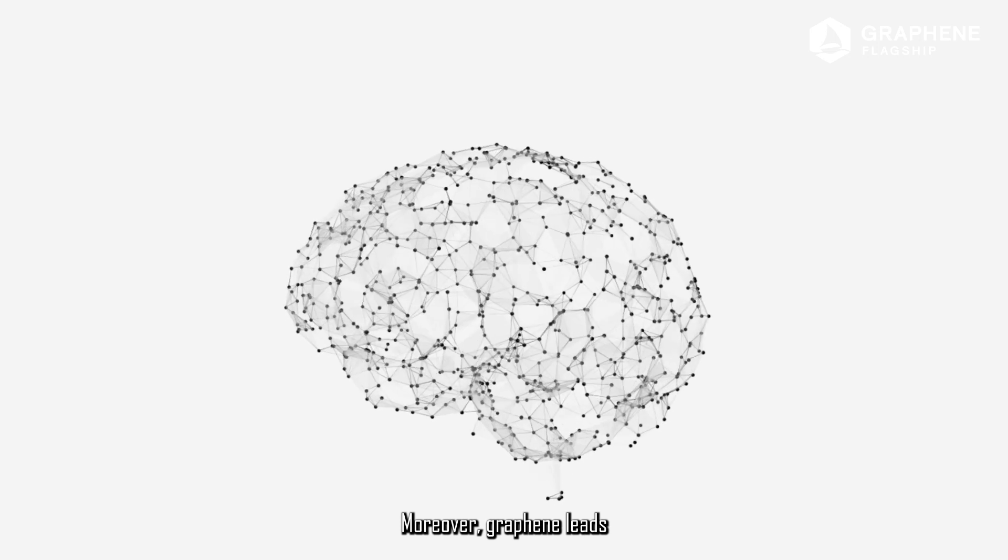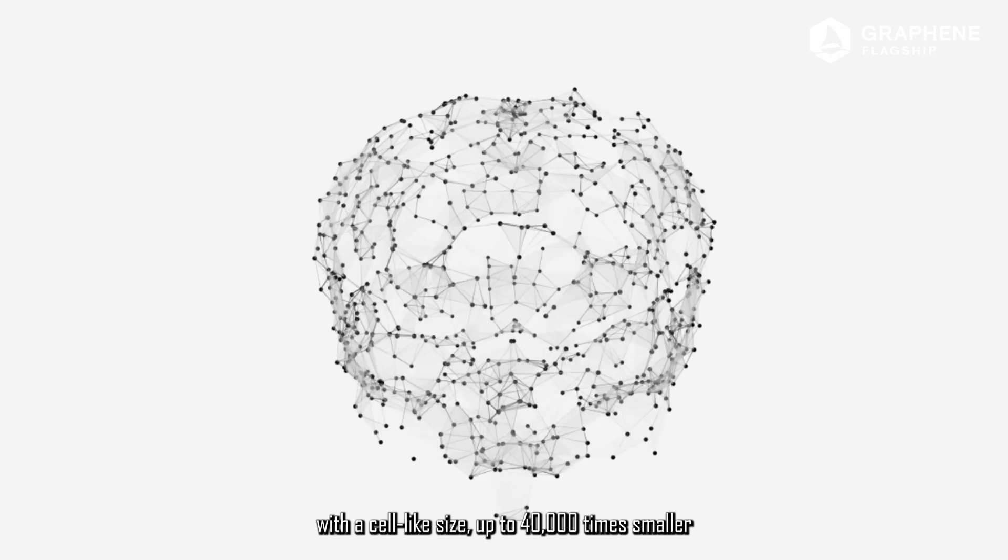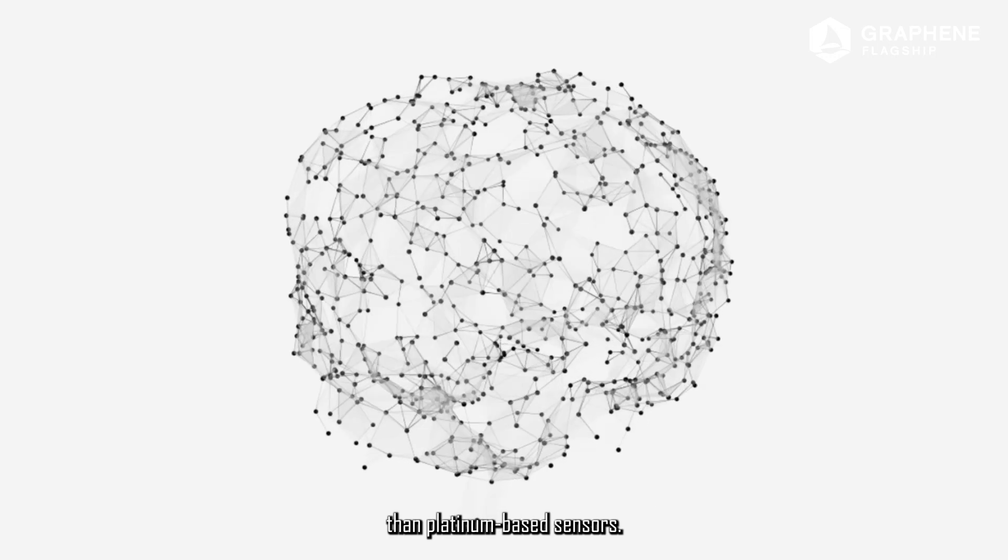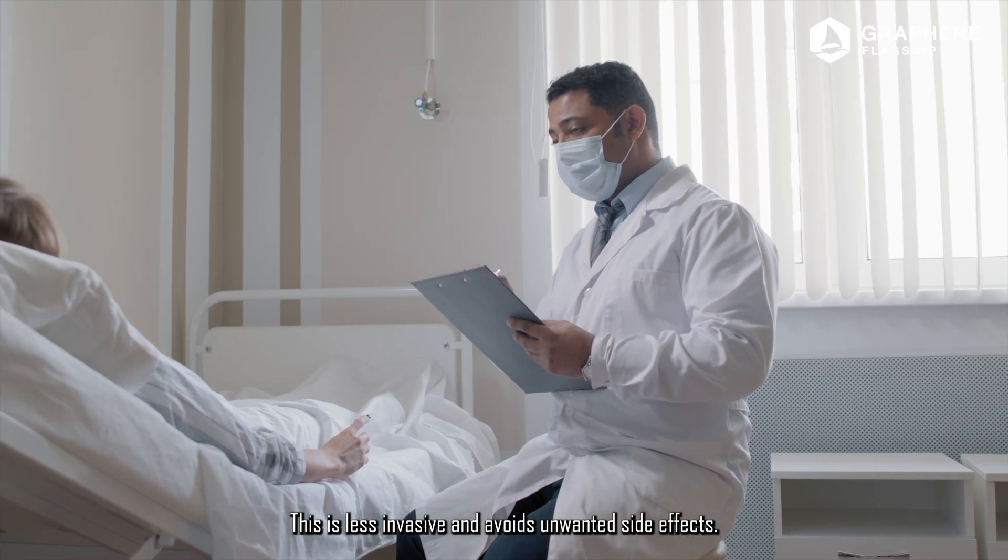Moreover, graphene leads to miniaturized brain sensors with a cell-like size up to 40,000 times smaller than platinum-based sensors. This is less invasive and avoids unwanted side effects.